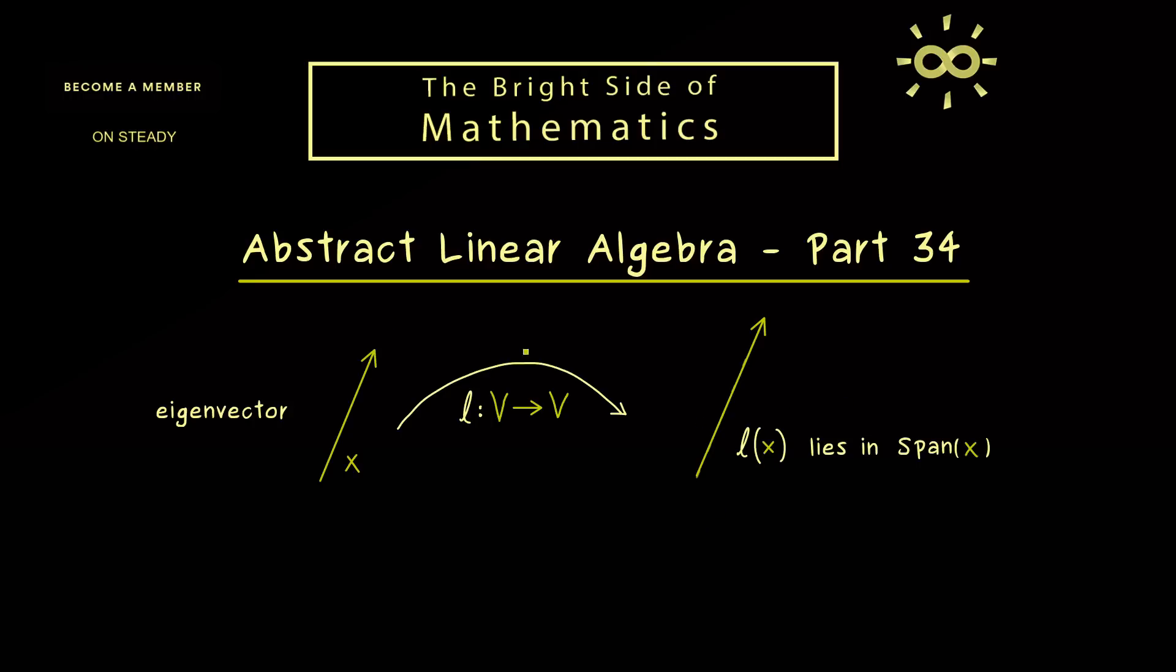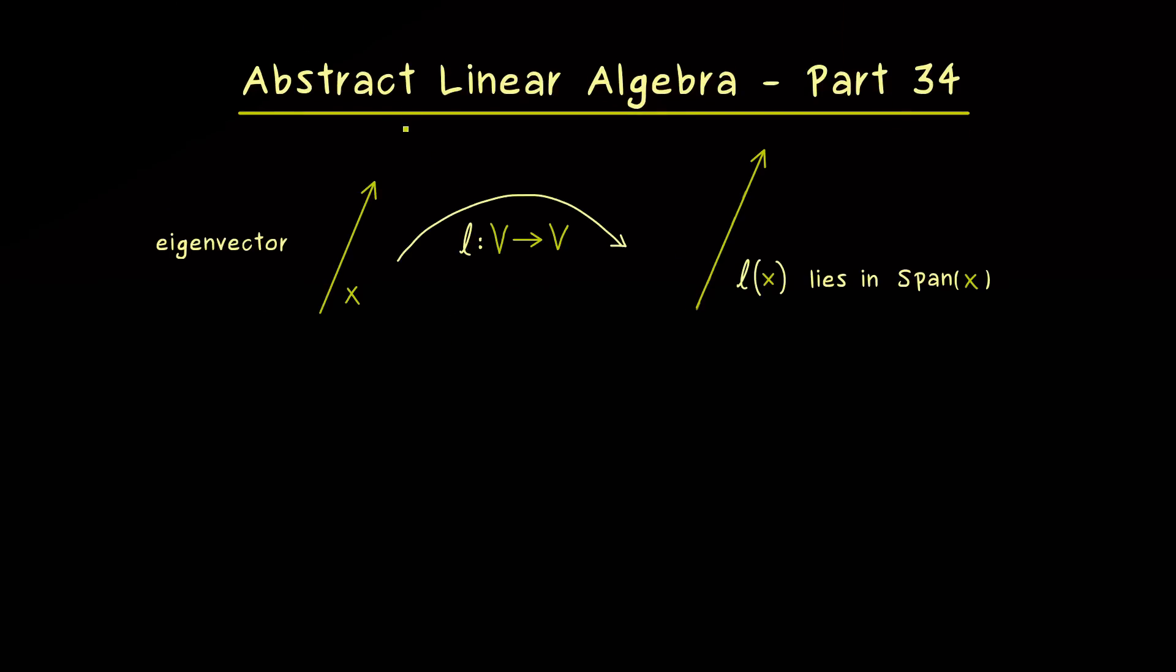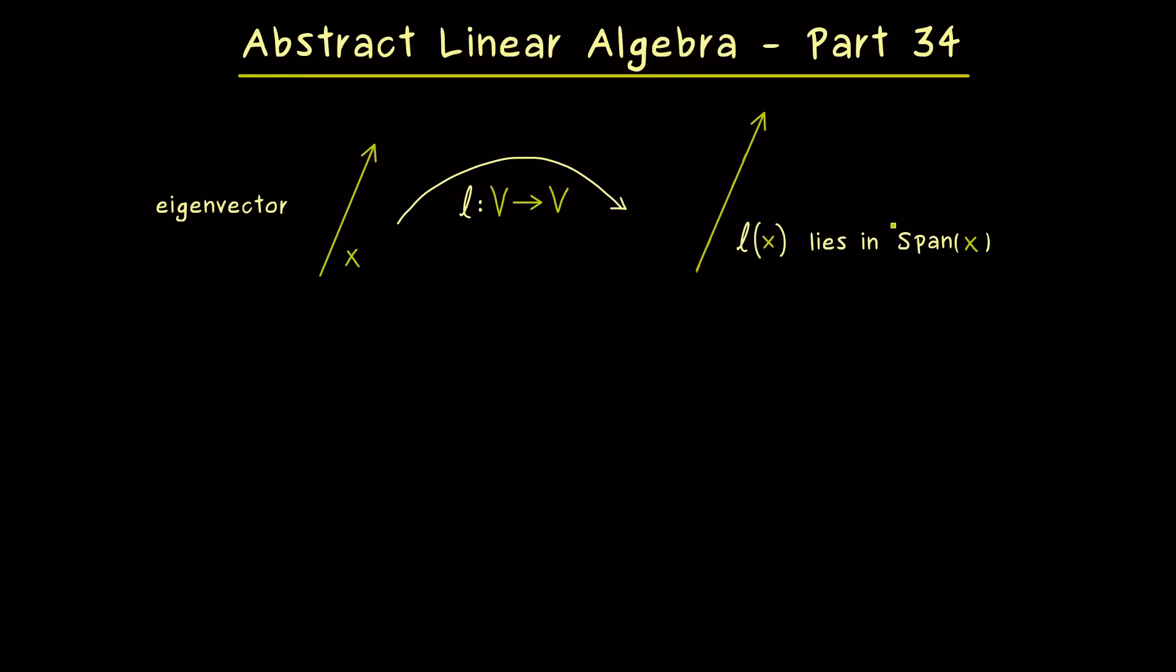This implies that the linear map is really simple for this given vector, because it's just scaling and nothing more. So you see, this is exactly the same idea as we have already discussed it for matrices in the linear algebra course. Therefore, I think we don't need more motivation here and we can immediately go to the definition.